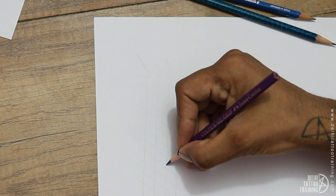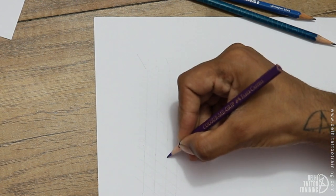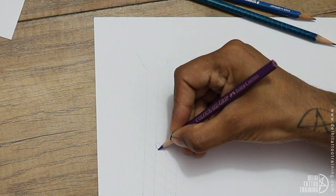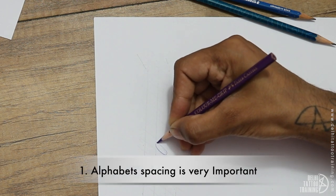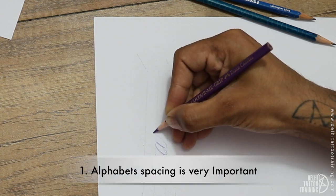There are four main points that are to be kept into consideration to ensure a beautiful calligraphy. Number one: the alphabet spacing is very important.